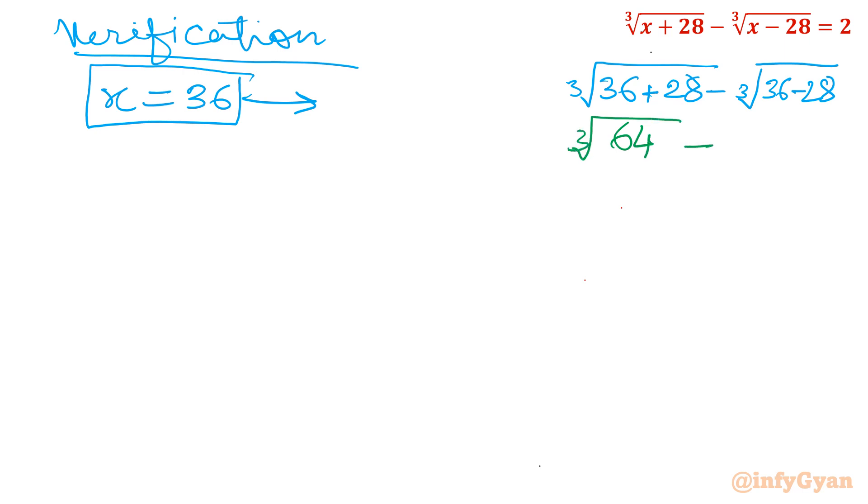So I will put here cube root of 36 plus 28 minus cube root 36 minus 28. Let us check whether it is coming out 2 or not. So I will write 36 plus 28 that is cube root 64 minus cube root of 8. This value is 4, this is 2. Answer is 2. That means it is true.